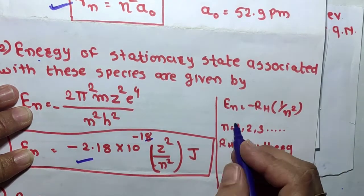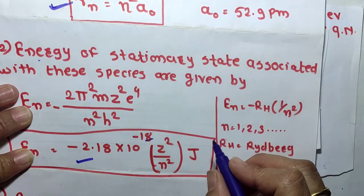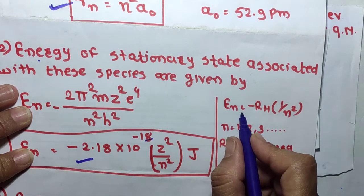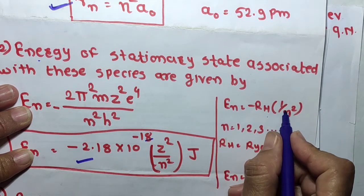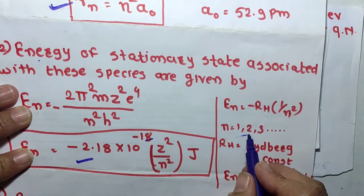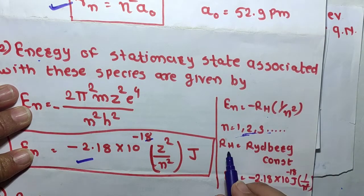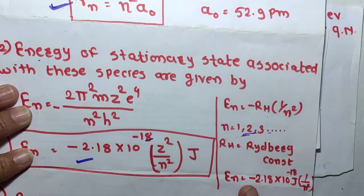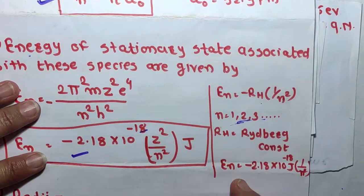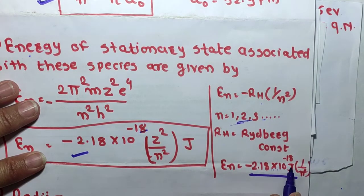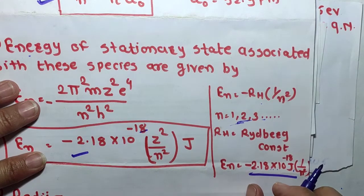The most important property associated with the electron is the energy of its stationary state, given by: En = −RH × (1/n²), where n = 1, 2, 3 and RH is called the Rydberg constant. Therefore the formula becomes: En = −2.18 × 10⁻¹⁸ / n² joules.